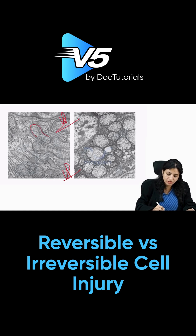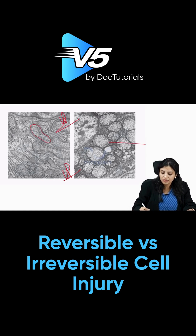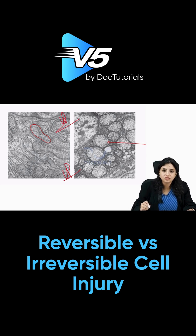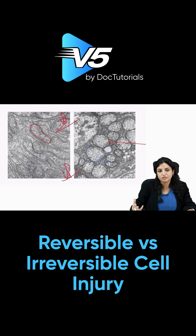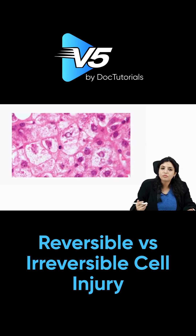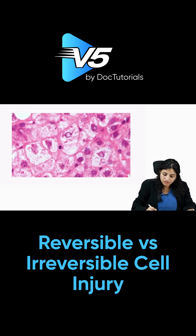The second electron microscopy image you should be clear on shows how the cristae of the mitochondria appear. Here the complete mitochondria has become like a balloon — it is distended — but there are no amorphous densities. Distension of the mitochondria is a classical feature of reversible injury. If there are large amorphous densities, then it is irreversible.